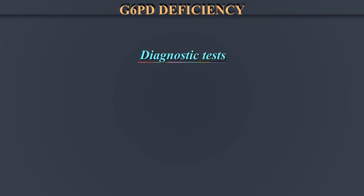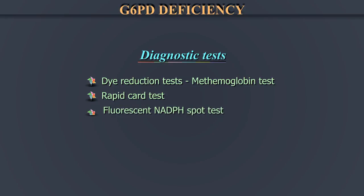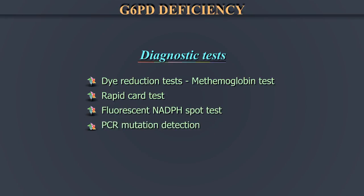The diagnostic tests are: 1. Dye Reduction Tests — the methemoglobin test, which will be described here. 2. The Rapid Card Test, which is also explained here. 3. The Fluorescent NADPH Spot Test. 4. PCR Mutation Detection.